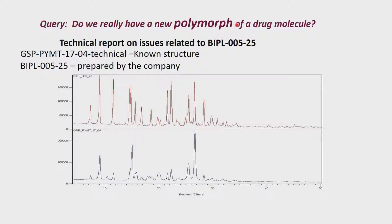We do not know what the compound is; even today I do not know, but it is now marketed. The idea is to see whether this compound is different from that. What is normally done is to record the powder pattern and put one on top of the other. When they did that, they found something like an extra peak here and some peaks looking different, and an additional peak which is probably due to lack of crystallinity. When you record two powder patterns you cannot immediately conclude whether it is a polymorph of a drug molecule or not — there is also a lot of resemblance between the two patterns.